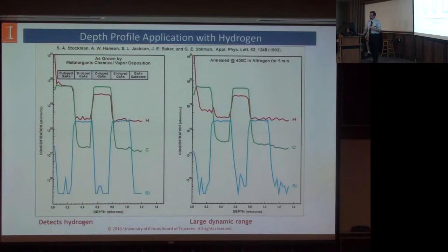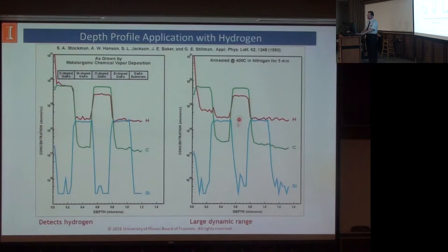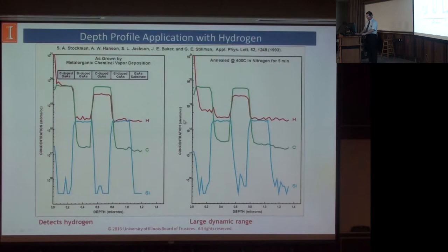Here are some examples. This is a depth profile of a gallium arsenide sample alternately doped with silicon and carbon and annealed in nitrogen. It shows our ability to follow dopant levels — this is the carbon dopant level, this is the silicon dopant level — and we can also follow hydrogen. As you're annealing, you're losing hydrogen to the surface, which may affect device properties. The other thing to note is we have a very large dynamic range — five to six orders of magnitude on this plot alone — and we can see hydrogen.